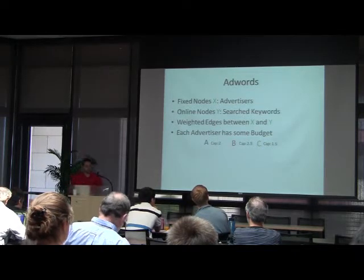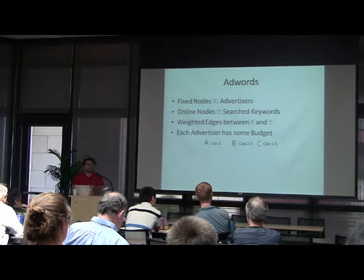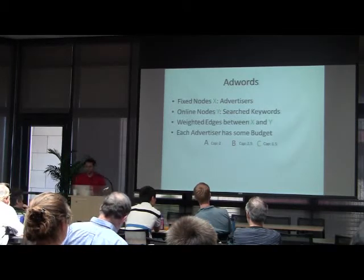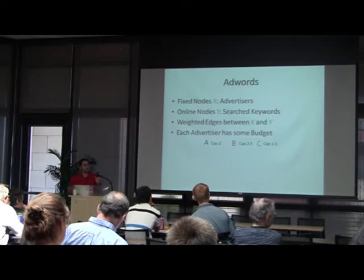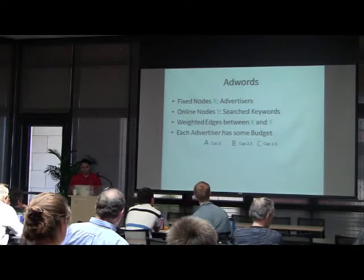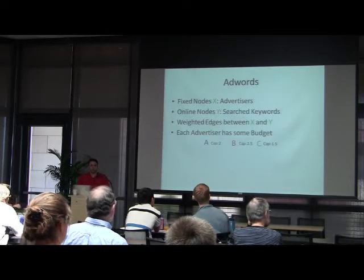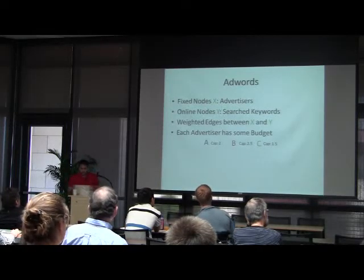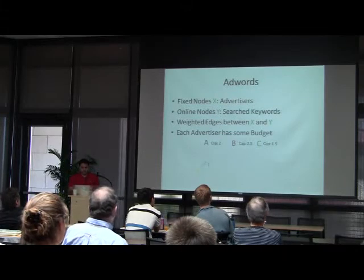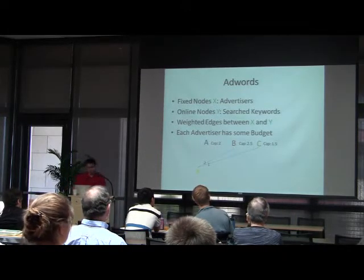You can think of them as search keywords. There are weighted edges between these two sets of nodes, and whenever an online node arrives, its edges will be revealed to us. Each advertiser also has some capacity or budget. In this example there are three advertisers with three different capacities.